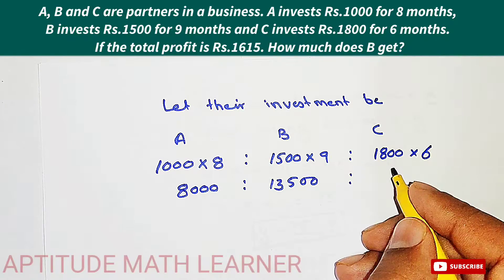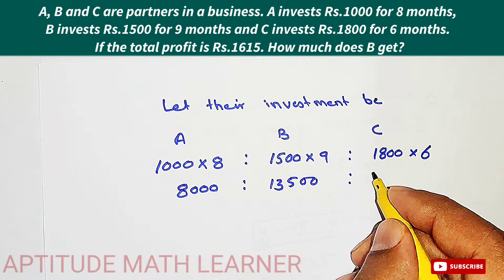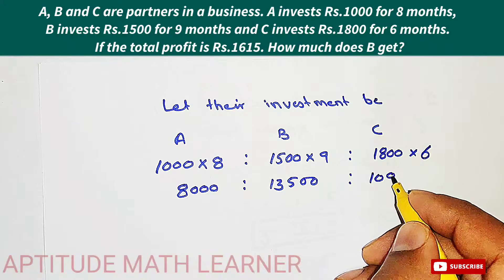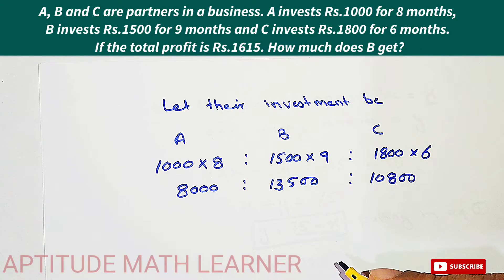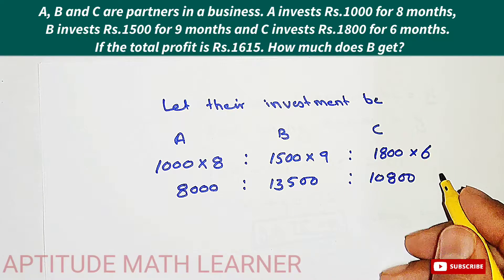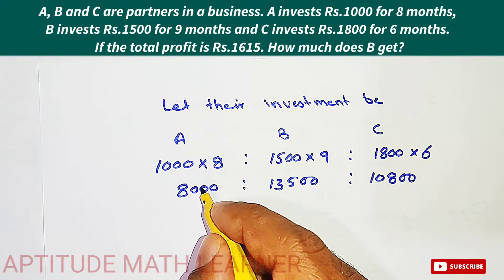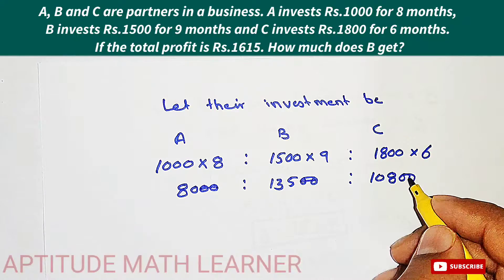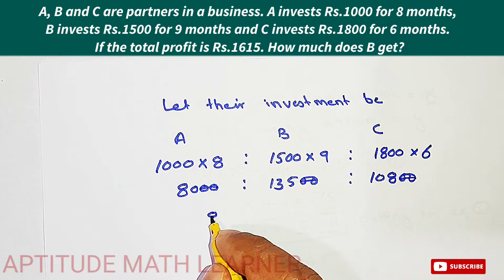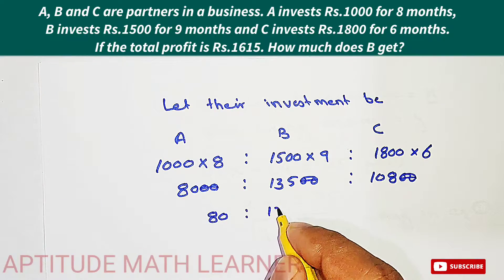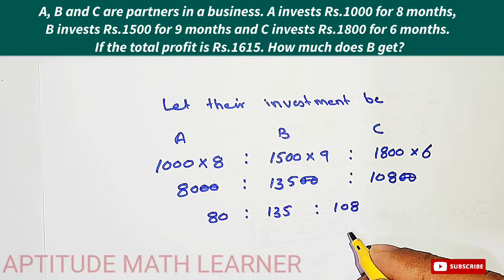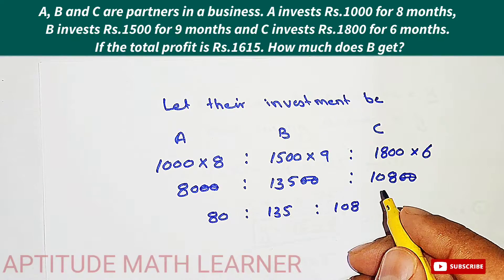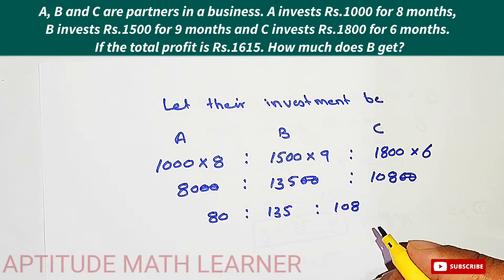And for C, 1800 multiplied by 6 gives 10,800. So the ratio is 8000 : 13500 : 10800. Now we bring this to its simplest form. We cancel out two zeros from each side and we get 80 : 135 : 108. We have now got the ratio in its simplest form.